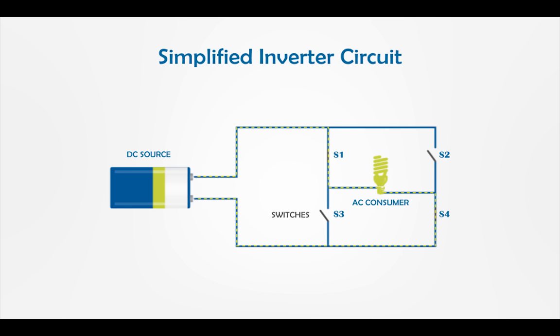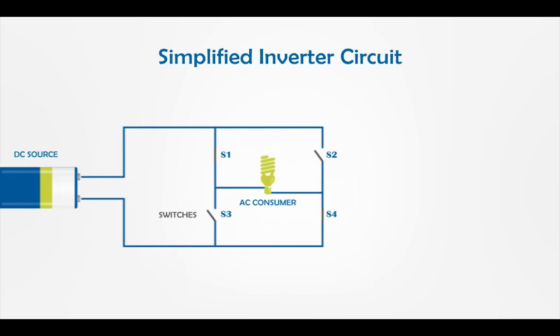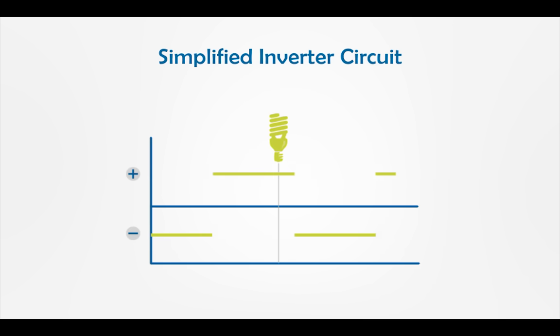As you can see, if we open switches two and three and then open switches one and four, this will cause the current to flow in two directions through the lamp. So actually, the lamp is facing an alternating current. The lamp will experience this as a square wave.